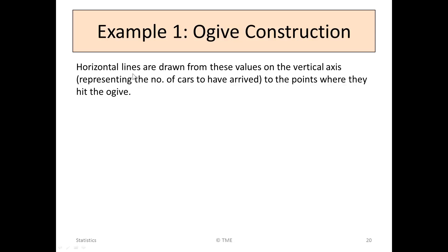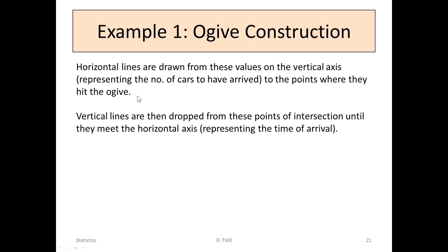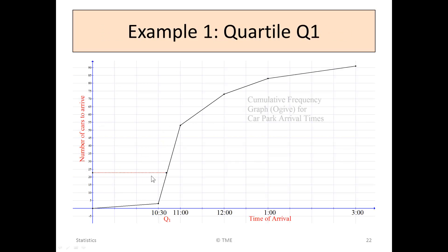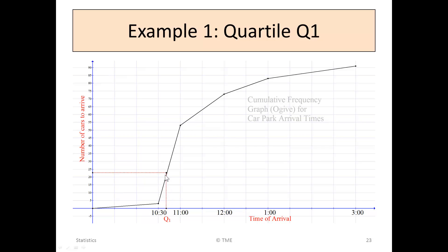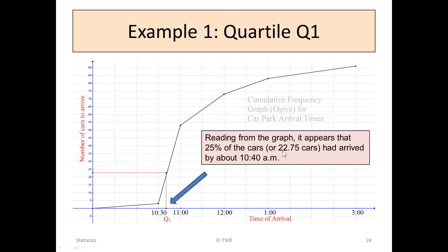To do this, we draw horizontal lines from the values on the vertical axis, representing the numbers of cars to have arrived, to the points where they hit the ogive. And vertical lines are then dropped to the points of intersection. Let's look at that on the graph. In the case of 25% of the cars, not 25 cars, but 25% of the cars, or 22 and a bit cars, we can draw a line across there to represent quarter 1, the first quarter. By dropping the vertical, we can see that somewhere around 10:40, or certainly between 10:30 and 11, but maybe nearer 10:40 than 10:50, we had a quarter of the cars in place. Reading from the graph, it appears that 25% of the cars, or 22.75 of the cars, had arrived by about 10:40.